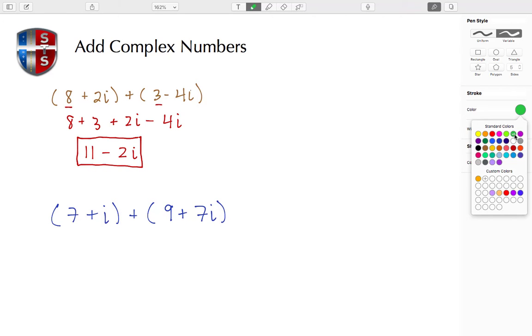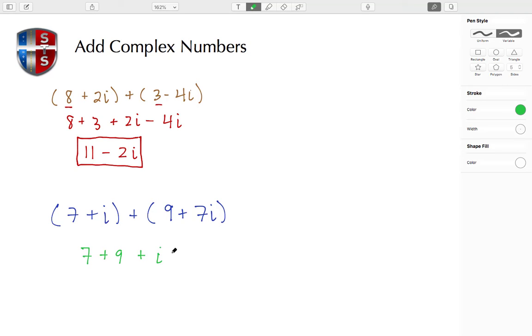Let's move on and work on the one here at the bottom. Again, let's combine or place our real parts together. So that's going to be the 7 plus the 9, and then we need to add the imaginary parts, which is just going to be the i plus the 7i.